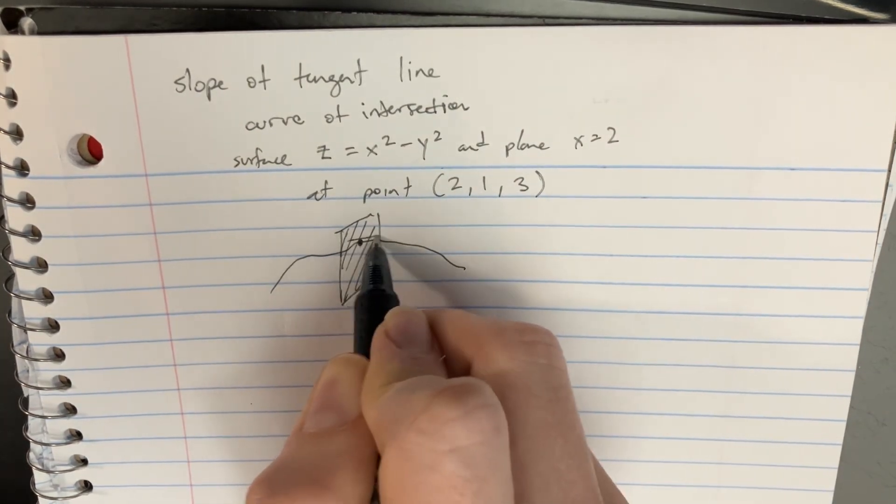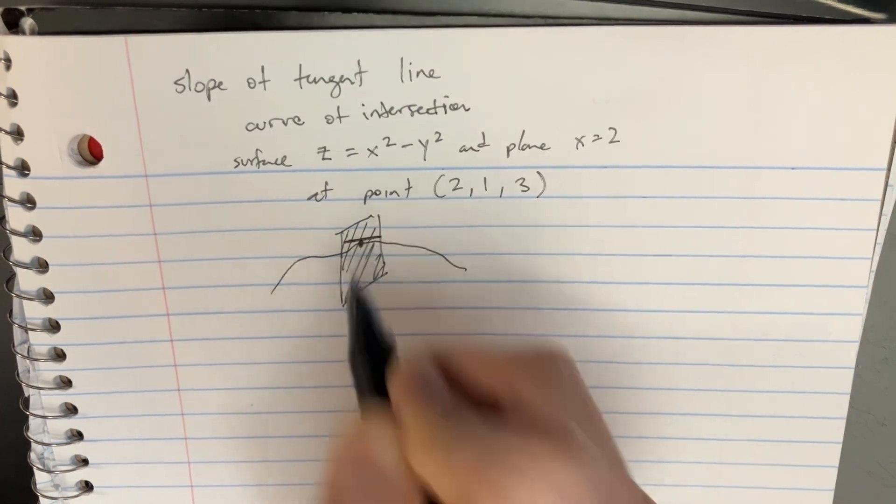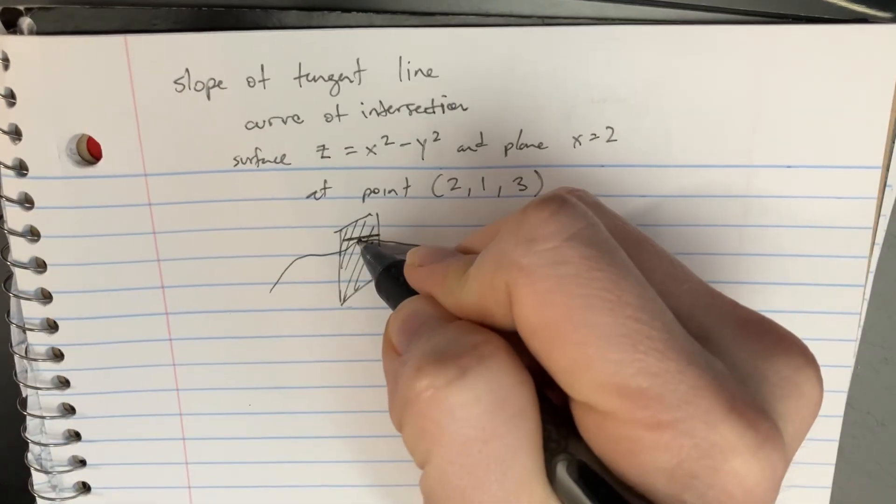We're looking for the tangent line. We know that we want to find a tangent line at that point. We're just going to find the derivative of that point.